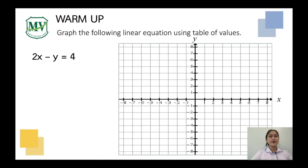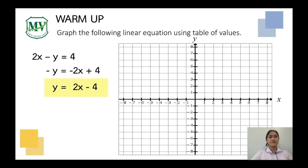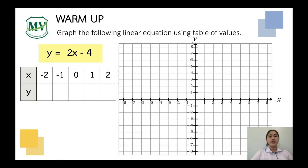We have here 2x minus y equals 4. Step number 1: express y as the subject of the equation. So from 2x minus y equals 4, it will now be y equals 2x minus 4. Step number 2: create a table of values. Plug in random values for x to substitute into the equation to solve for the value of y.